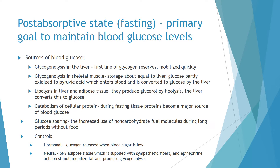Post-absorptive state, or fasting: the primary goal is to maintain blood glucose levels. Sources of blood glucose include glycogenolysis in the liver, which is the first line of glycogen reserves and is mobilized quickly. Glycogenolysis in skeletal muscles has storage about equal to that of the liver; glucose is partially oxidized to pyruvic acids, which enter the blood and are converted to glucose by the liver. Lipolysis in the liver and adipose tissue produces glycerol, which the liver then converts to glucose.